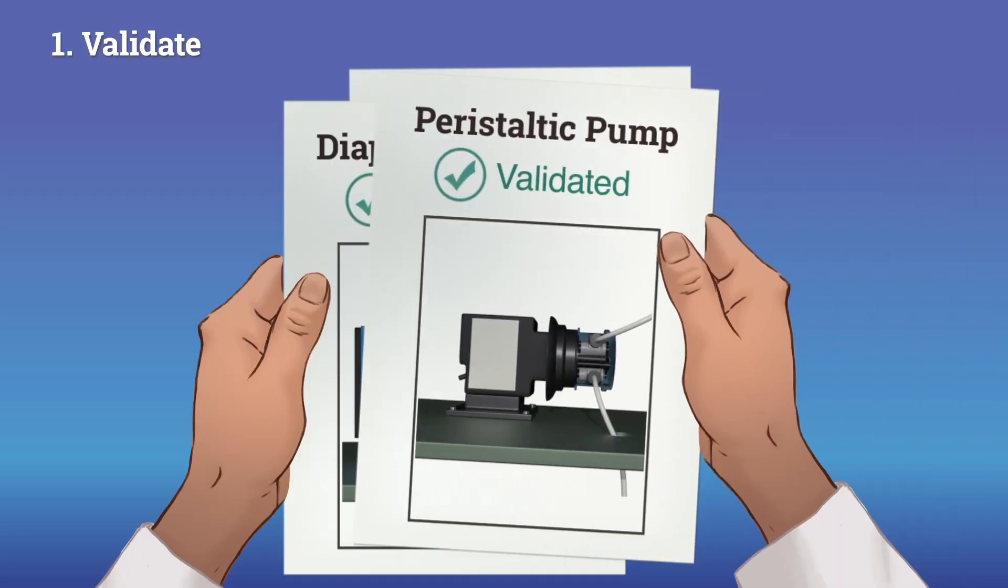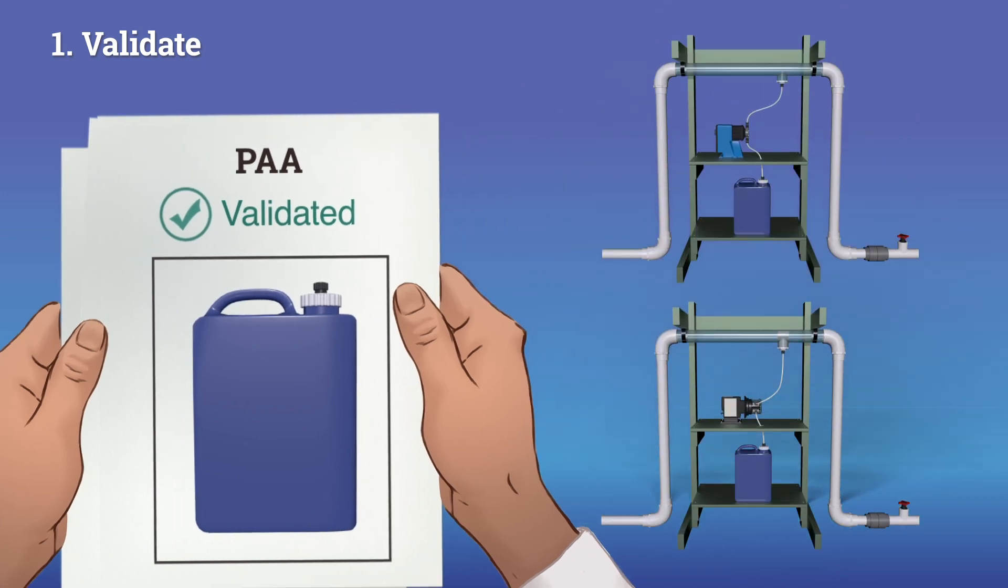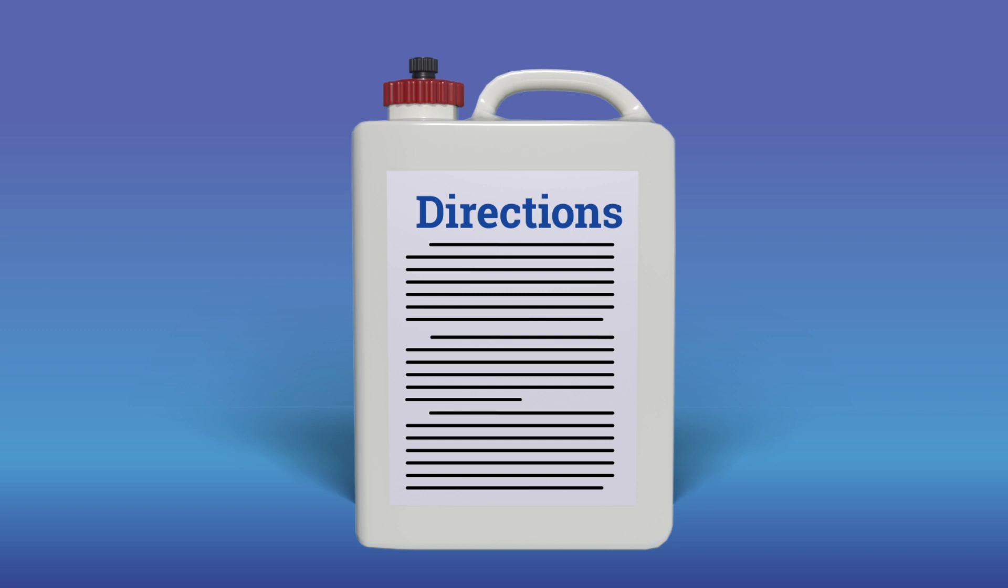You validate the system when it is initially installed or when big alterations are made to make sure it is working similarly to what has been shown to be effective by scientists. Check the label for your product to make sure it's used as directed.